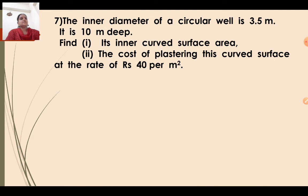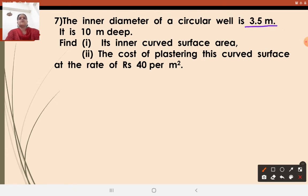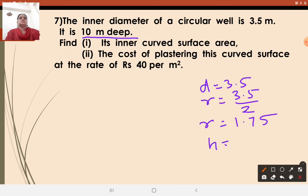Next question: The inner diameter of a circular well is 3.5 meter and it is 10 meter deep. Find its inner curved surface area, and also find the cost of plastering this curved surface area at a rate of Rs. 40 per meter square. The inner diameter is given as 3.5 meter, so the radius equals 3.5 by 2 equals 1.75 meter. It is 10 meter deep, so H equals 10 meter.